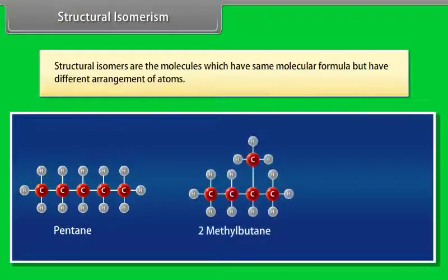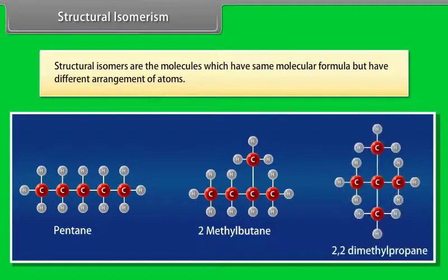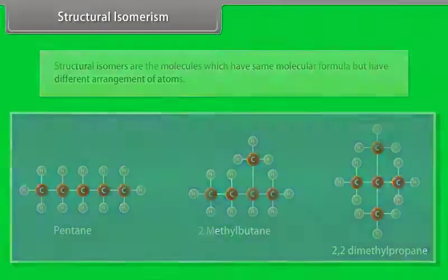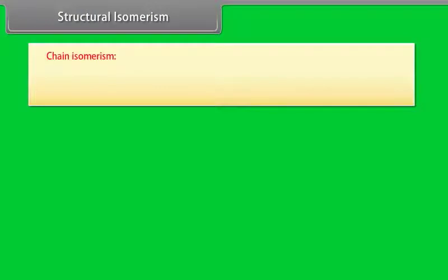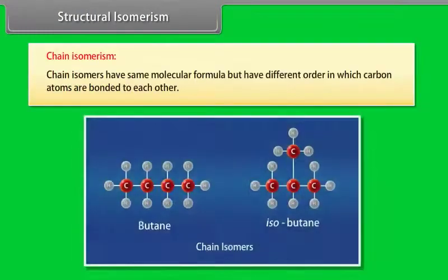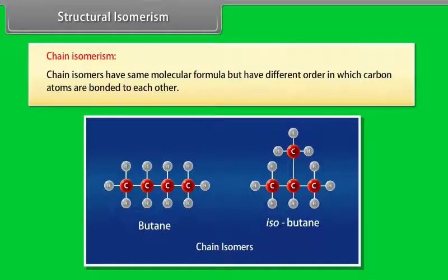Structural isomers are molecules which have the same molecular formula but have different arrangement of atoms. Chain isomers have the same molecular formula but have a different order in which carbon atoms are bonded to each other.